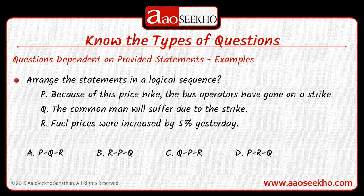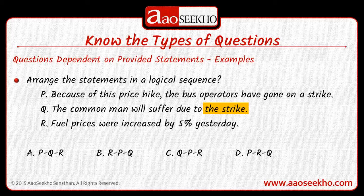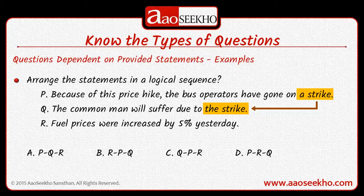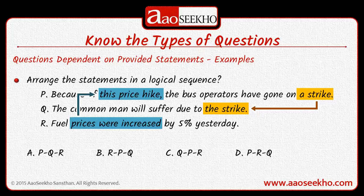Let's read the statements. Statement P: Because of this price hike, the bus operators have gone on a strike. Statement Q: The common man will suffer due to the strike. Statement R: Fuel prices were increased by 5% yesterday. Statement Q mentions the strike, which is already discussed in Statement P. So Q will certainly follow P. But P mentions 'this price hike', which is introduced in Statement R — fuel prices were increased by 5% yesterday. So Statement R comes first, giving us the sequence R, P, Q — which is option B.